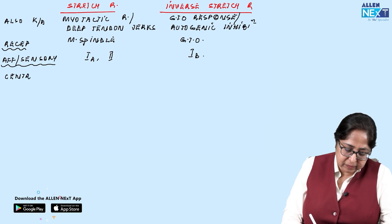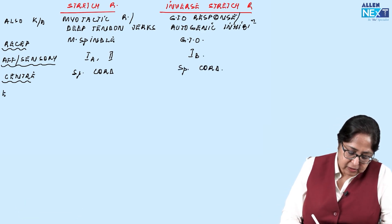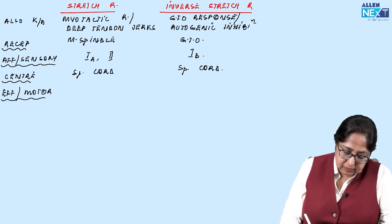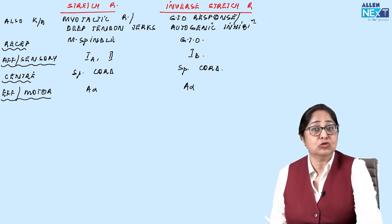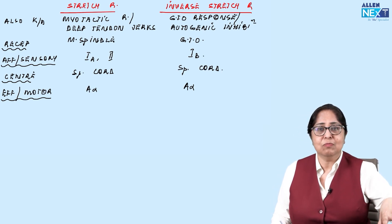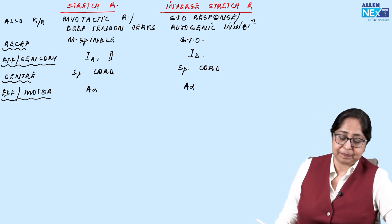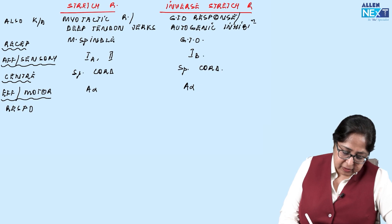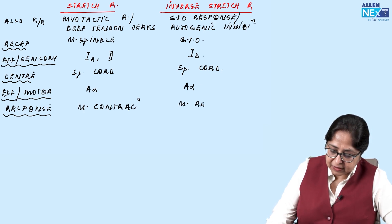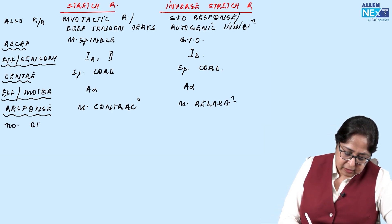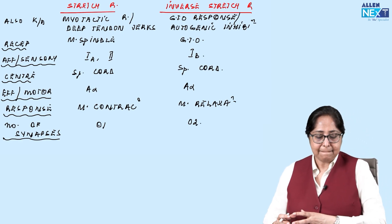The center for both reflexes is the spinal cord — both are spinal reflexes. The efferent or motor fibers for both is A alpha. Note: the motor to the muscle spindle itself is gamma, but the motor arm of both the stretch reflex and the inverse stretch reflex is A alpha. The response of the stretch reflex is muscle contraction; the inverse stretch reflex causes muscle relaxation. The stretch reflex is monosynaptic; the inverse stretch reflex is bisynaptic.